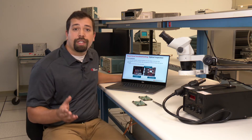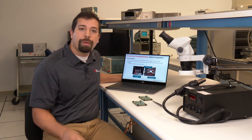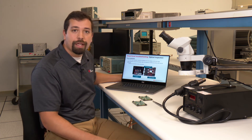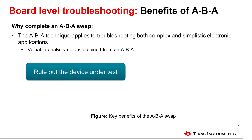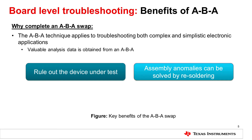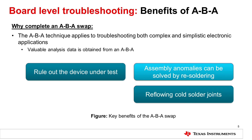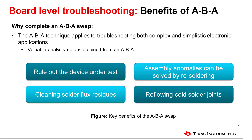Now that we've discussed the optical inspection, let's talk about the benefits of completing an ABA swap. The ABA swap can be applied to both complex and simplistic circuits. It is a valuable technique which will help us rule out the device under test as the root cause. It also helps to check for assembly anomalies, which can be solved from resoldering, reflows of cold solder joints, and cleaning solder flux residue.